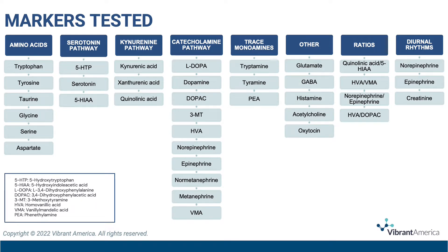Vibrant also assesses trace monoamines, which include tryptamine, tyramine, and PEA, which stands for phenethylamine. The other neurotransmitters tested include glutamate, GABA, histamine, acetylcholine, and oxytocin, which include a mixture of both inhibitory and excitatory neurotransmitters. By analyzing the ratios of various analytes, there can be a greater understanding of enzyme activity involved and the potential for genetic influences, nutrient deficiencies or excesses, and other interferences.